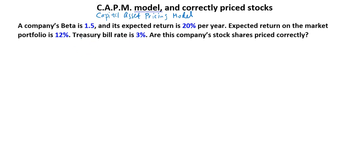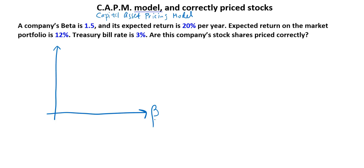We are talking about high risk measured by beta, which is also known as systematic risk, versus high return. When something is risky, you're only going to want to buy it if you're compensated correctly for that amount of risk — so high risk, high return. This part of stock return fluctuations, the part of total risk you have no control over, is also known as systematic risk or non-diversifiable risk.